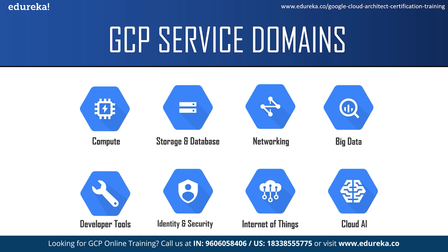Google also provides a free trial to all new customers. It provides $300 in free credit to fully explore and conduct an assessment of Google Cloud Platform. You can use this $300 to try various Google Cloud products and learn how to use them. You won't be charged until you choose to upgrade and it is valid for 90 days. GCP also has a free tier in which all Google Cloud customers can use selected products like Compute Engine, Cloud Storage and BigQuery free of charge within the specified monthly usage limits, and these resources will not be charged as long as you stay within the free tier limits.